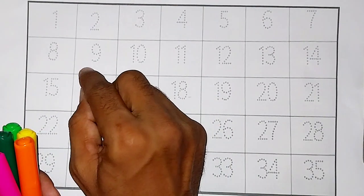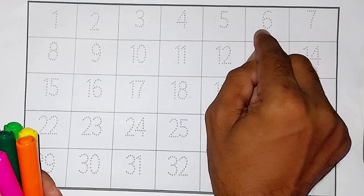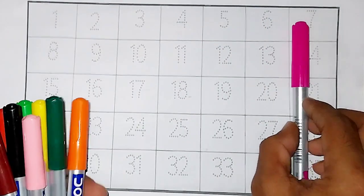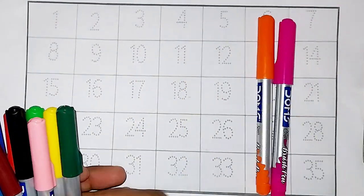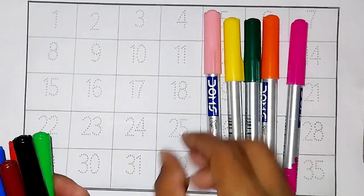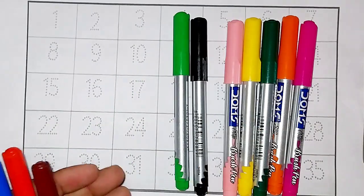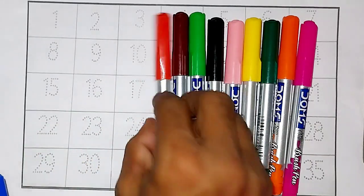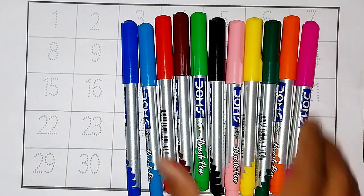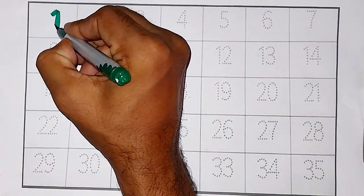Hello kids, today learn one two three four five six seven. Numbers and colors: pink color, orange color, green color, yellow color, light pink color, black color, light green color, brown color, red color, sky blue color, blue color.